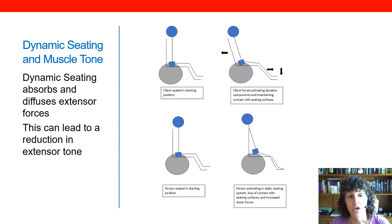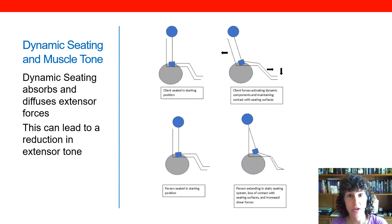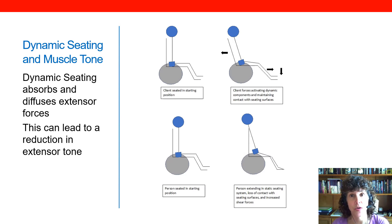Dynamic seating actually absorbs these forces, and that energy is stored within the dynamic component itself in the form of an elastomer, spring, or hydraulic. That stored energy then helps the client to return to an upright position.